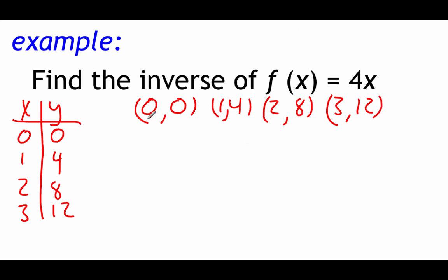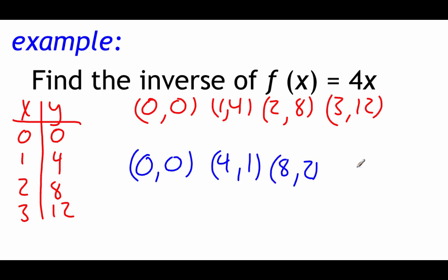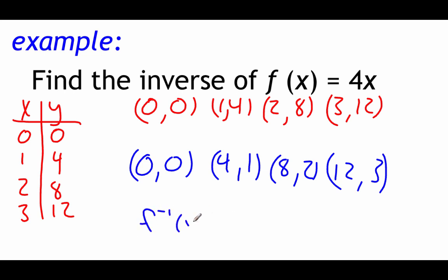Now if we flip those x and y values around on all of them, the first one stays the same — still 0, 0. Flipping the second point gives us 4, 1. The next point is 8, 2. And our last point is 12, 3. We're trying to figure out a relationship that takes our x value and turns it into our y value. To get from 4 to 1, one option would be dividing by 4. Checking the others: 8 divided by 4 is 2, and 12 divided by 4 is 3. So our supposed inverse function is x divided by 4.